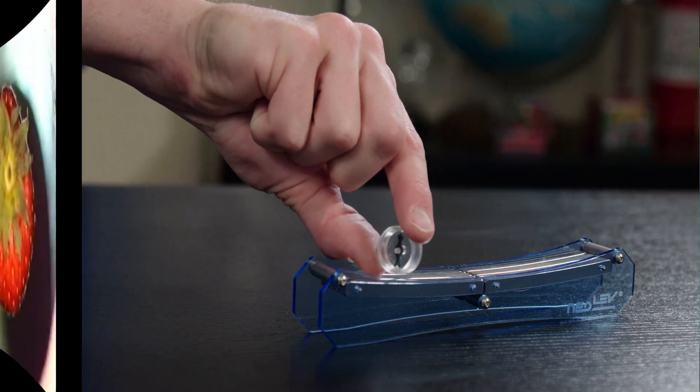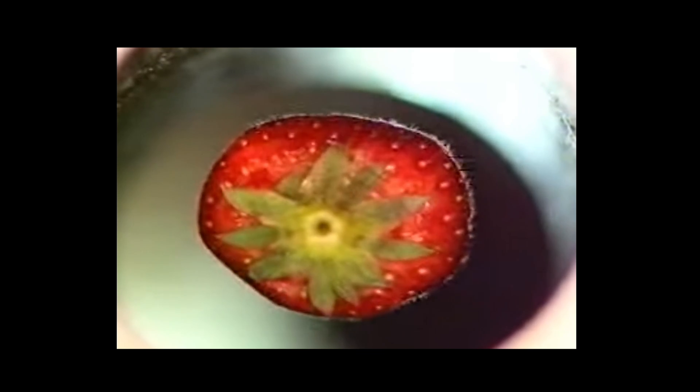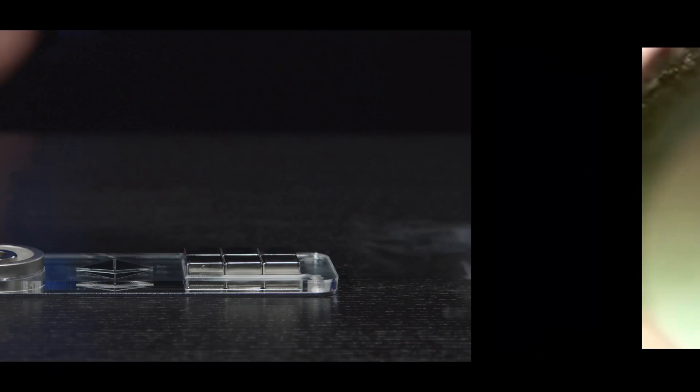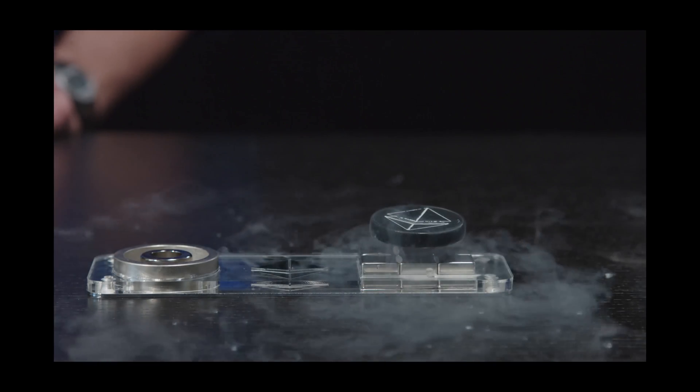In conclusion, diamagnetism is an interesting and promising phenomenon in which macroscopic objects can be made to float. It reminds us of how much more we can achieve in the future of material science.